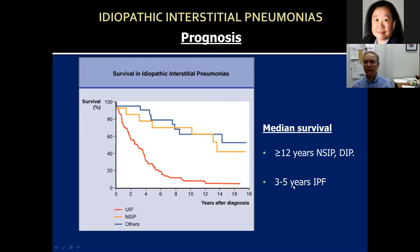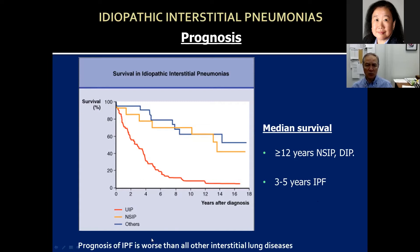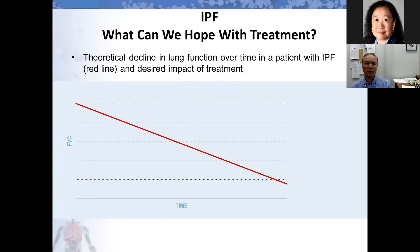Median survival means 50% of patients will live three to five years — meaning there is a 50% chance a patient would die within three to five years once IPF is diagnosed. That's without treatment, before we had antifibrotics available. That's why it's critical not to miss IPF. Now we have two antifibrotic medications that can help improve prognosis.